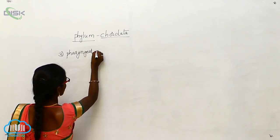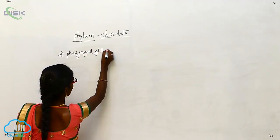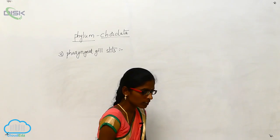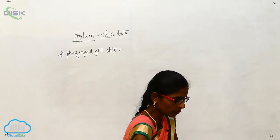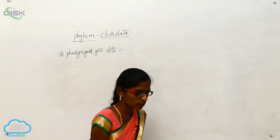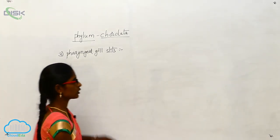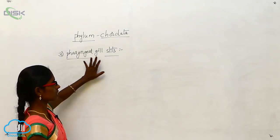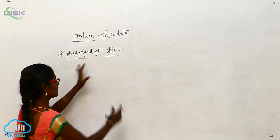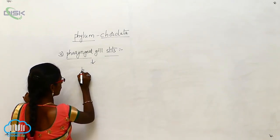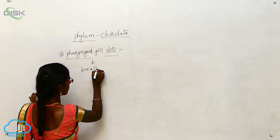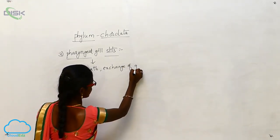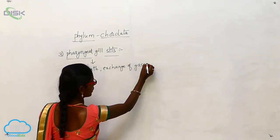Pharyngeal gill slits. The pharyngeal gill slits are the lateral perforations of the wall of the pharynx throughout their life. So this is pharyngeal gill slits. By these gill slits, it will breathe and exchange of gases also.